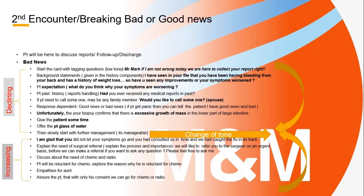Explain the surgical referral in layman's language: 'We'd like to refer you to the surgeon and what they will do is excise this part.' Then explain the next steps: 'After the surgery we will go for chemo-radiotherapy.' It is important for you to take patient consent and explore their concern before any major intervention like surgery. There is a possibility the patient may be allergic to something, or they may say they're not interested in surgery and would prefer other measures. Always take the patient's concern after the surgical procedure is explained.